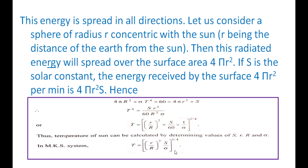This is the formula for the temperature of the sun: T = (small r / capital R)^(1/2) × (S / σ)^(1/4), where r is the radius of the Earth's surface orbit, R is the radius of the photosphere, S is the solar constant, and σ is Stefan's constant. The value obtained is approximately 6000 Kelvin.